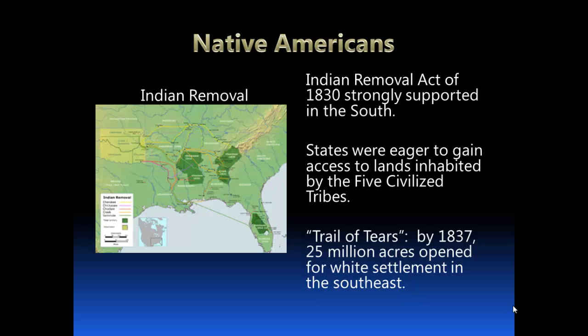There were lands inhabited by the five civilized tribes of the East, and states wanted to gain access and ownership to them because of the rich, fertile lands there and the potential for those lands — also in an effort to make sure control remained under the U.S. government. Andrew Jackson's administration was behind this, and I've read that Jackson in his later years expressed a great deal of regret that he supported it.